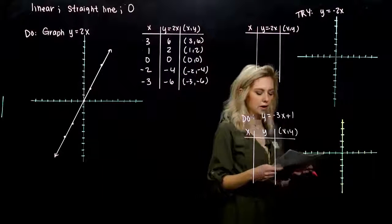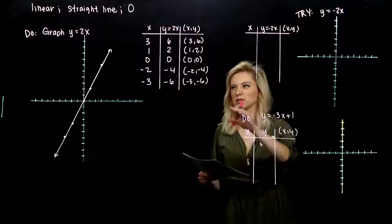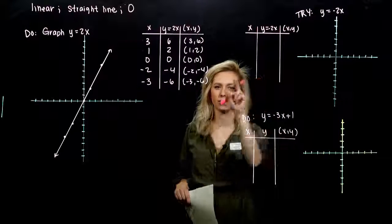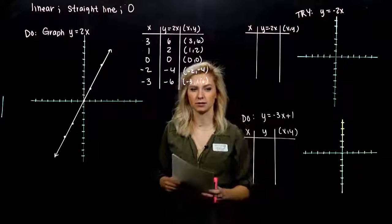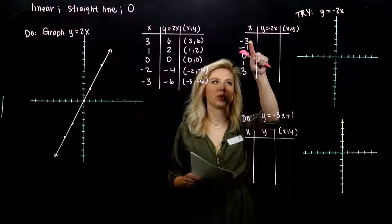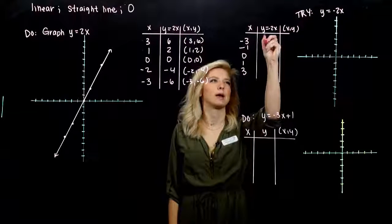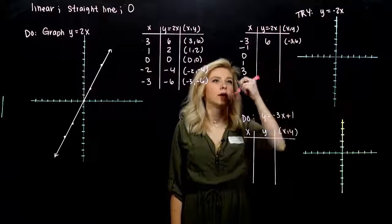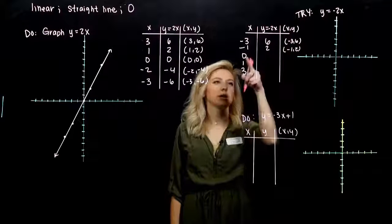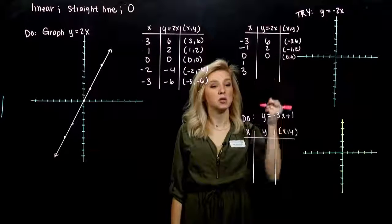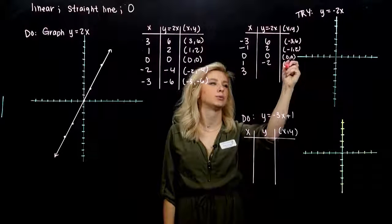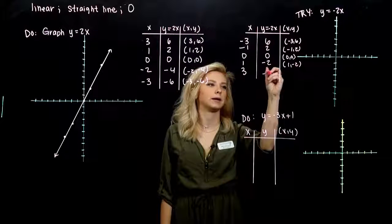Now take those same values, or similar small ones for x, and plug them into this next equation — it's very similar but has a negative sign out front. If I plug in minus 3 for x, I get positive 6. If I plug in minus 1, I get positive 2. If I plug in 0, I still get 0, so it's still going through the origin. Plugging in 1 gives minus 2, and plugging in 3 gives minus 6.